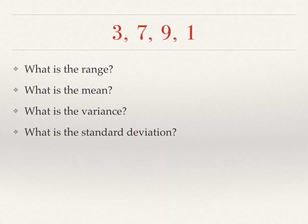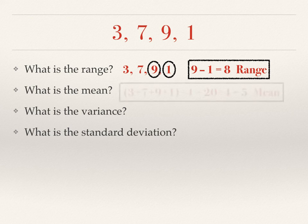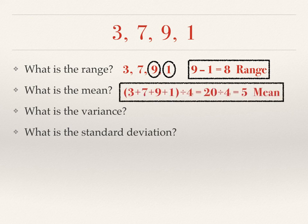All right, so here we are. We asked you to find these measures of the data. We asked you to find the range, the mean, the variance, and the standard deviation. Here's your range. Check that you got that right. Remember the mean. We're going to add the four numbers and divide by four, because there's four numbers in the set.